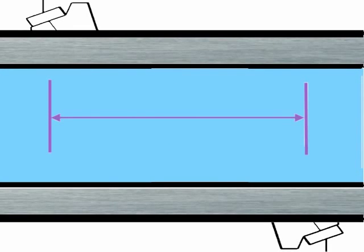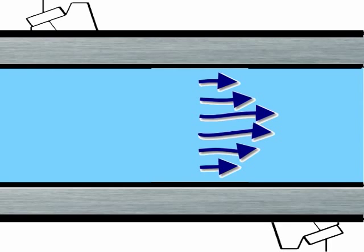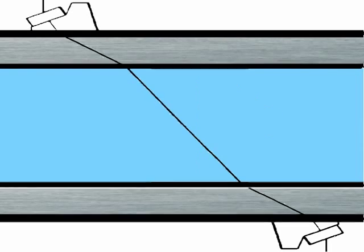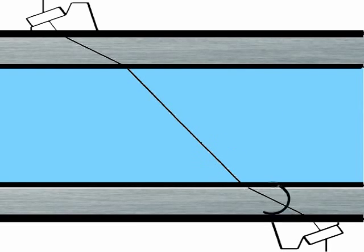This relationship is a function of how far apart the transducers are and the flow profile of the liquid in the pipe. For us to get both of these signals across, we have to firstly place the transducers very accurately on either side of the pipe.